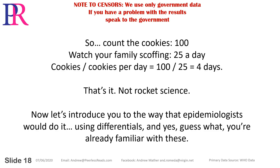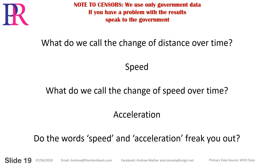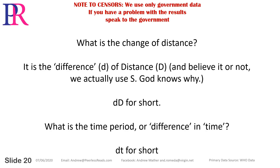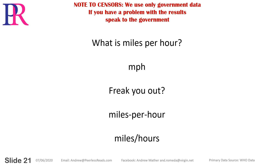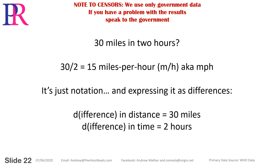Now let's introduce you to the way that epidemiologists would do it, using differentials. And yes, you're already familiar with these. What do we call the change of distance over time? Speed. What do we call the change of speed over time? Acceleration. What is the change of distance? It is the difference — D — of distance. Delta D for short. What is the time period or difference in time? DT, or delta T for short. Miles per hour: miles over hours. 30 miles in 2 hours — 30 over 2 equals 15 miles per hour. It's just notation and expressing it as differences.